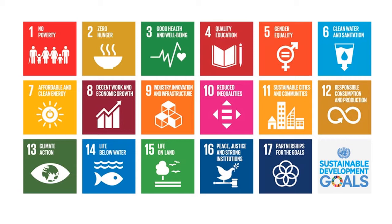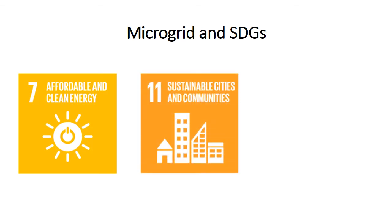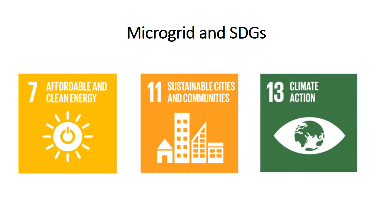Some of the SDG goals are related to microgrid. Goal number 7 is affordable and clean energy for all. Goal number 11: microgrid helps build sustainable cities and communities. Microgrid also helps in climate action, which is goal number 13, because it uses renewable energy sources, thereby reducing greenhouse gas emissions.